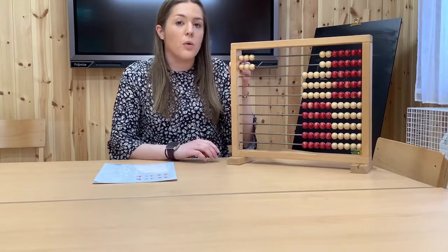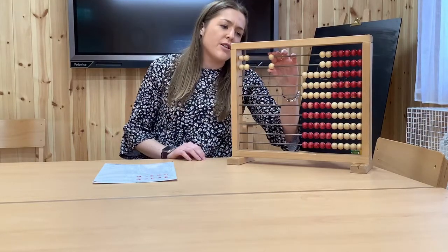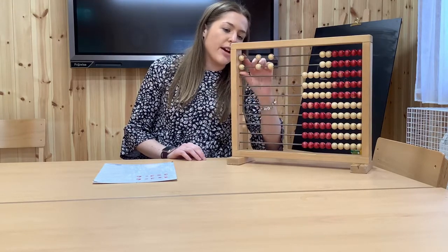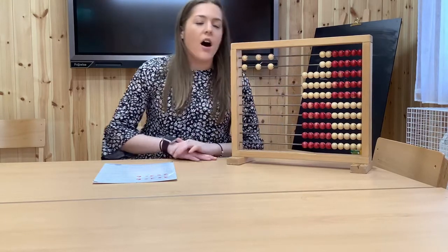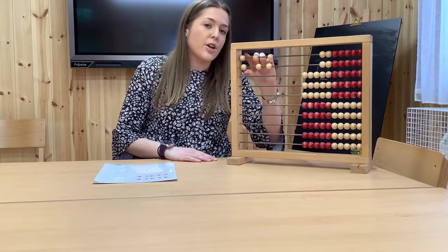First, you have to start with the whole, which we know is 6. And if I was to do 6 divided into 3, so 1, 2, 3, I can see that I've got 2. So 6 divided by 3 equals 2.